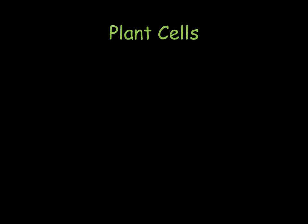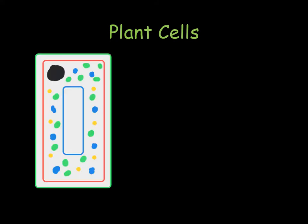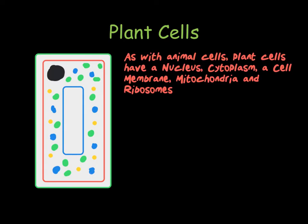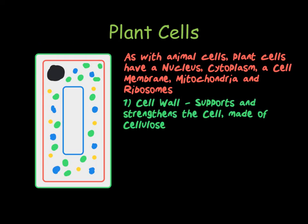Plant cells are quite similar to animal cells. However, they have a few extra organelles that you need to know. Just as we had with animal cells, we have a nucleus, a cell membrane, cytoplasm, mitochondria, and ribosomes. However, we have three more that we need to know. First, we have the cell wall, which goes around the outside of the cell membrane. This is very rigid and is made of cellulose. It supports the cell and helps to strengthen it.